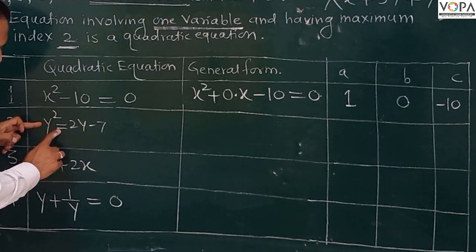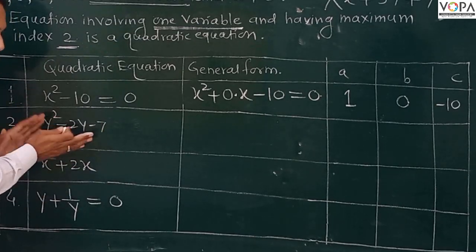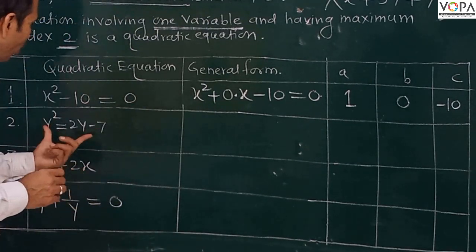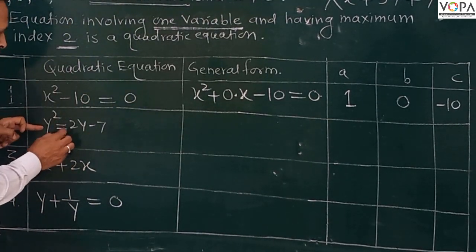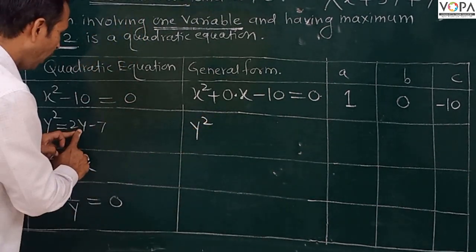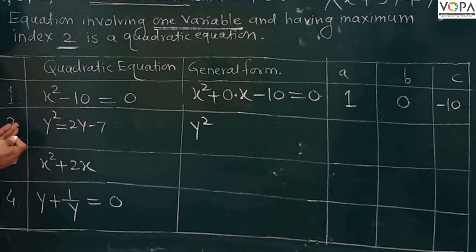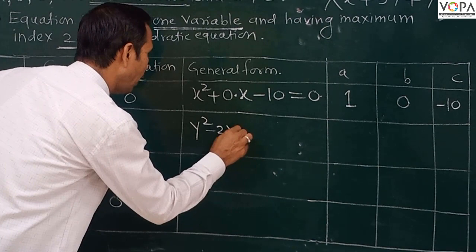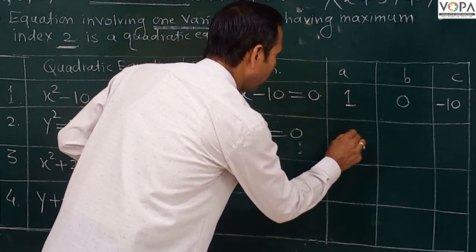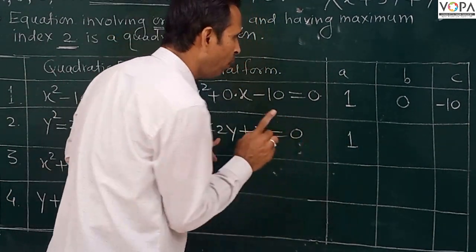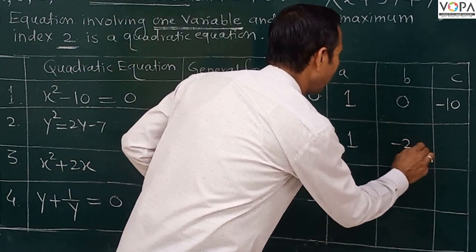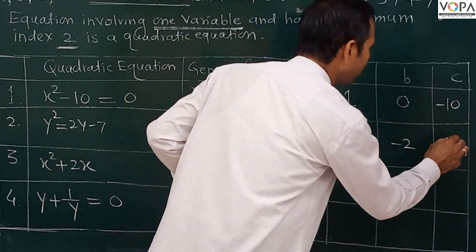The next equation is y² = 2y - 7. This equation is not written in standard/general form. To convert it, bring all terms to the LHS: y² - 2y + 7 = 0. The value of a is 1, value of b is -2, and value of c is 7.